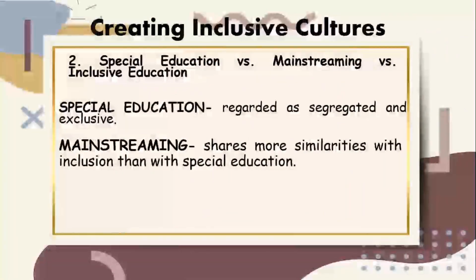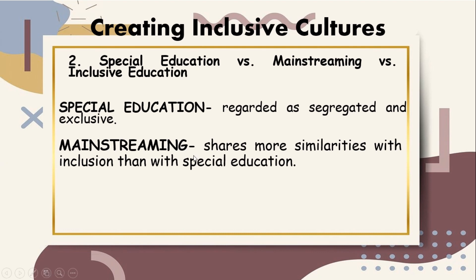Let us now proceed to discussing special education versus mainstreaming versus inclusive education. Part of what needs to occur when creating culture is to also determine distinctions among frameworks and practices. Most important is to understand how special education, mainstreaming, and inclusive education differ from each other. Special education is often regarded as segregated, but it must be noted that this perception is entirely due to its nature of addressing cases in a highly individualized way — this is not to mean that special education violates human rights, as it assesses, instructs, and evaluates students individually and intentionally, and is beneficial to those with very unique needs.